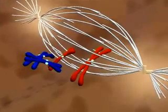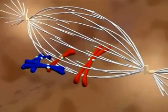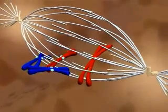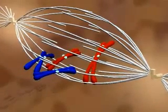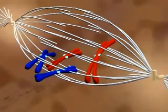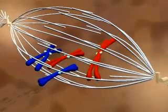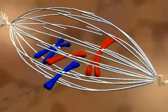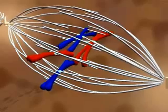Spindle fibers are forming and breaking down. When kinetochores capture spindle fibers, they stabilize them by giving them something to pull against.